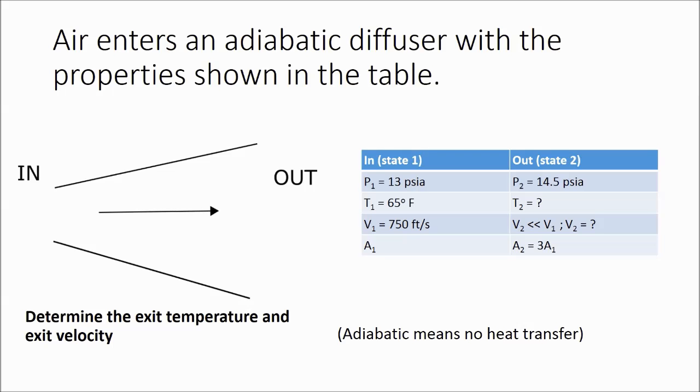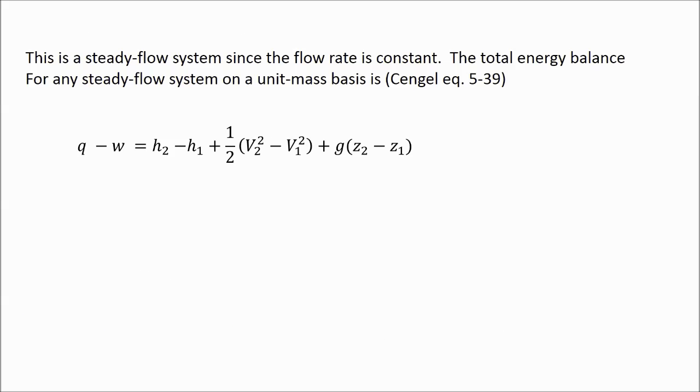First, we'll write down the general energy balance equation. Since the flow rate in the system is constant, this is a steady flow system. Therefore, the total energy balance equation is given by q minus w equals h2 minus h1 plus one half v2 squared minus v1 squared plus g times z2 minus z1.